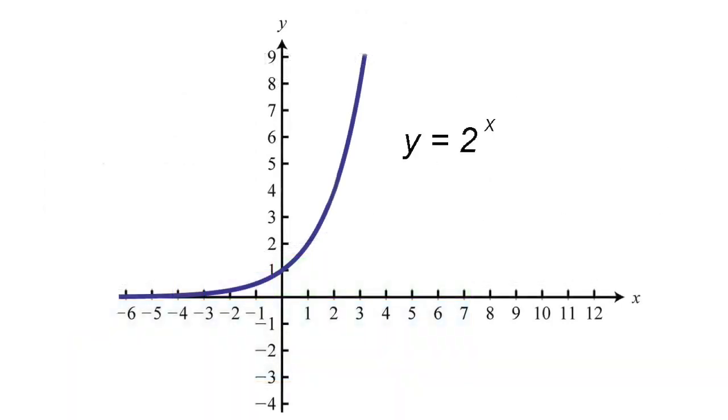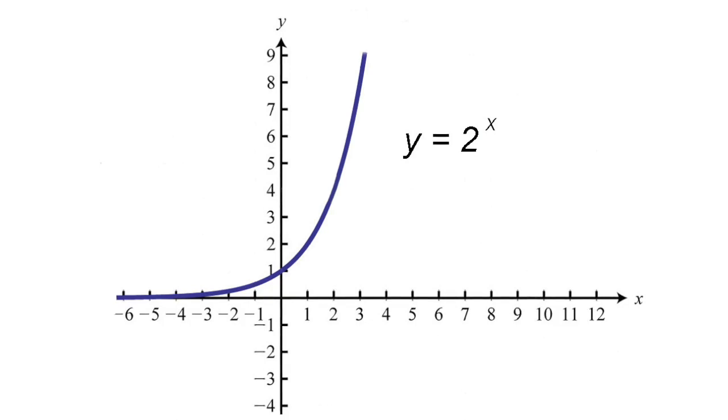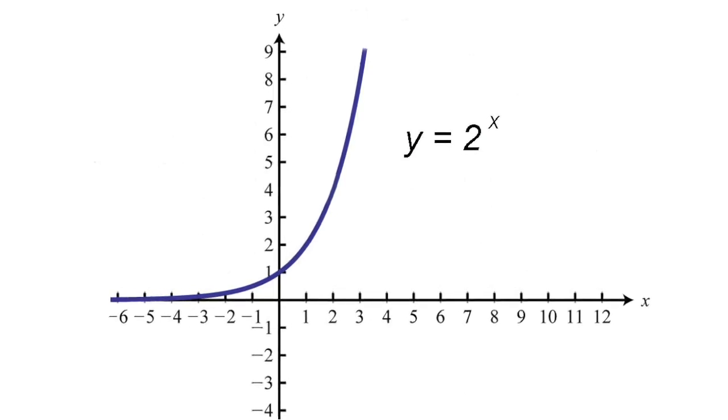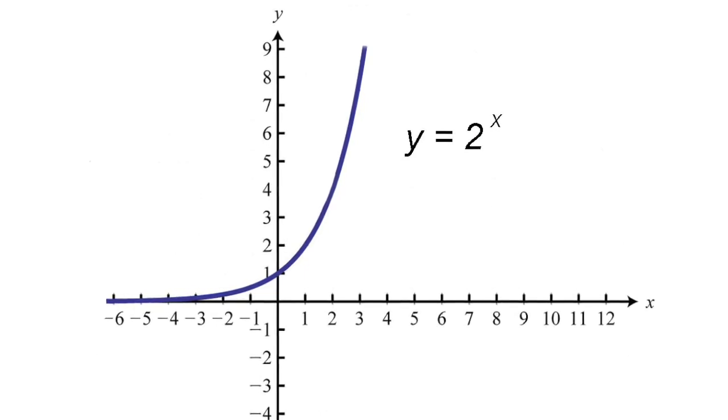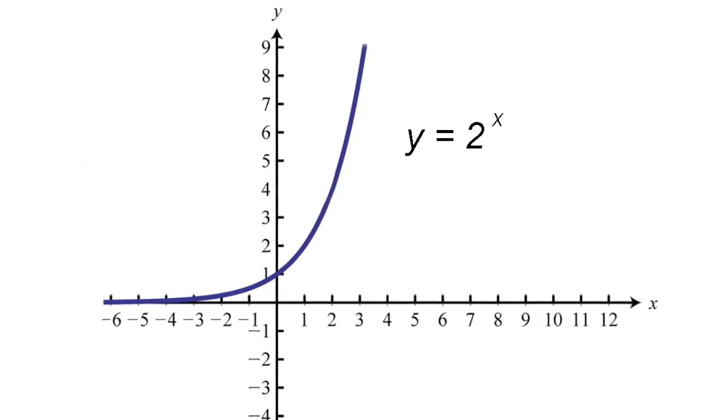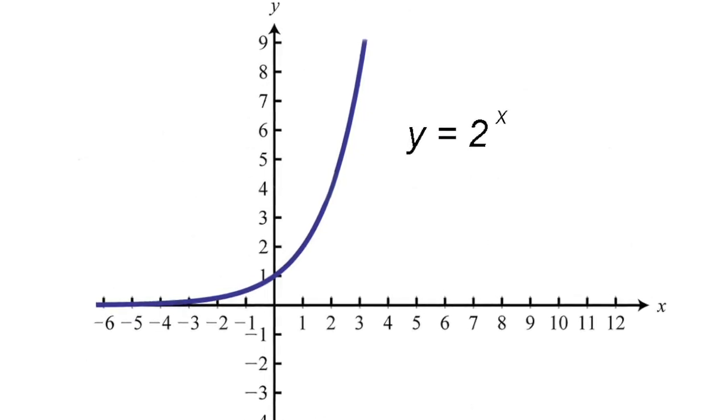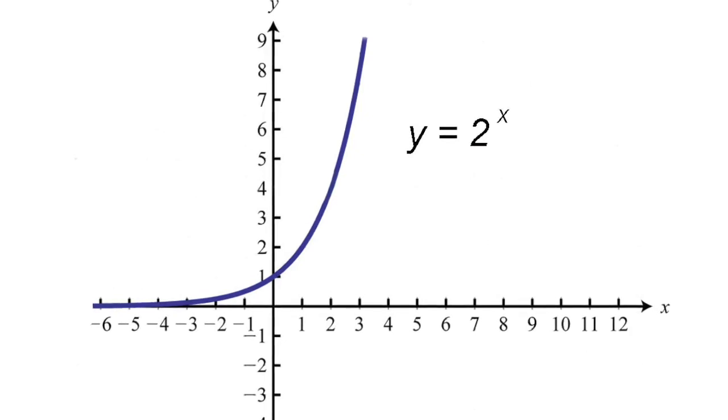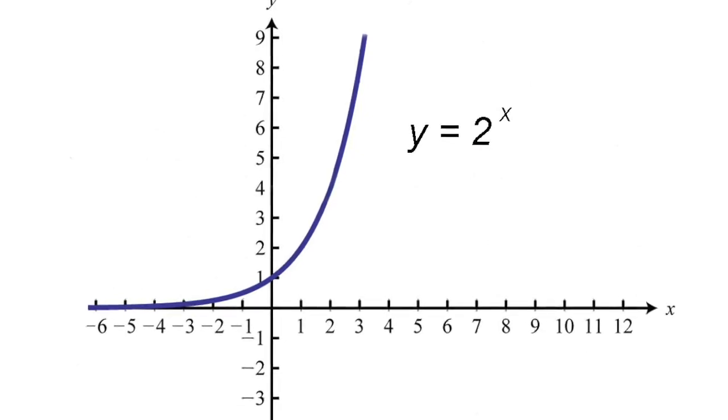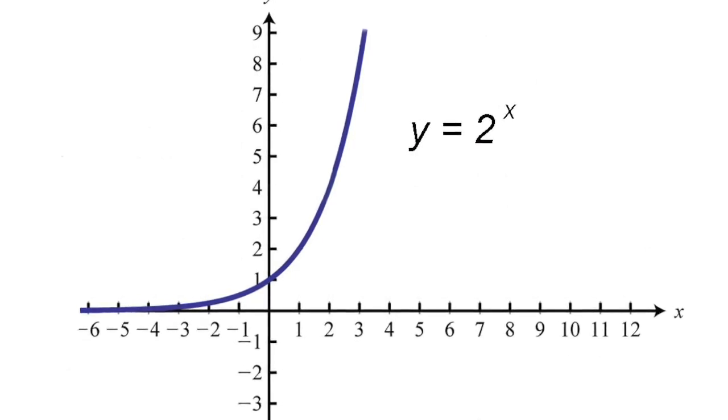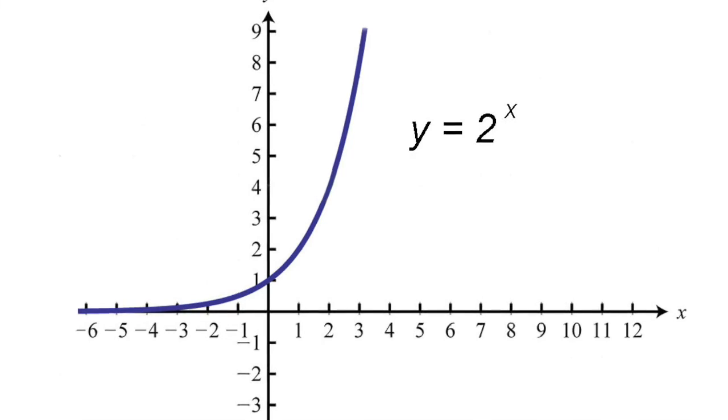Another situation where E turns up has to do with exponential growth. An exponential curve is one defined by a number raised to the power x. The slope or steepness of such a curve increases as x gets bigger. The slope of the exponential curve 2 to the x at any point x is approximately 0.693 times 2 to the x. The slope of 3 to the x is approximately 1.098 times 3 to the x, and so on. Always with exponential curves, the slope is proportional to the height.